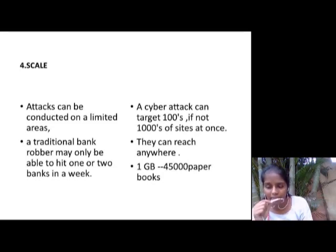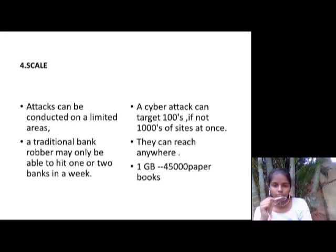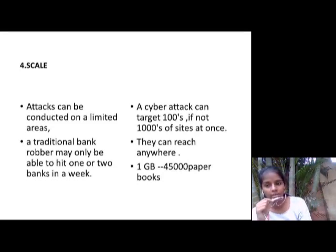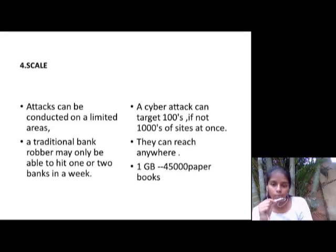The fourth difference is Scale or Reach. In a conventional crime, an attack can be conducted on a limited area — for example, a traditional bank robber may only be able to hit one or two banks in a week. But in cyber crime, the attacker can target 100 to 1,000 sites at once, because they can reach anywhere, and even 1 GB of data contains the equivalent of 45,000 paper books.